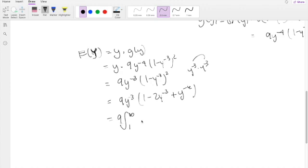And I'm going to throw that constant out, so you get 9 times the integral from 1 to infinity of y^(-3) minus 2y^(-6) plus y^(-9) dy. Taking the antiderivative, you get y^(-2) over negative 2, adding 1 so that's going to be negative 1 half.